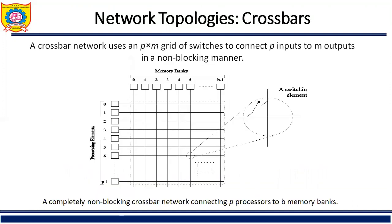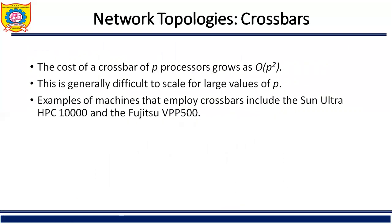Another topology is the crossbar network. A crossbar network uses a P by M grid of switches to connect P inputs to M outputs in a non-blocking manner. The processors are shown on the left-hand side and the memory banks on the top, where each processor communicates with memory with the help of a switching element. If the switch is open, there is no communication between processor and memory; if the switch is closed, there is communication.